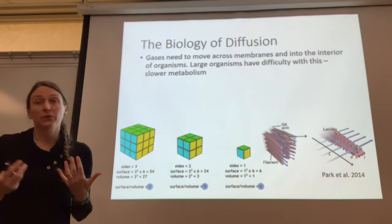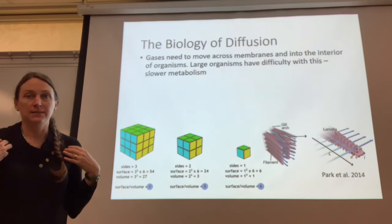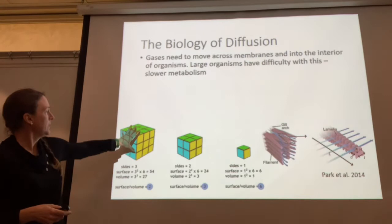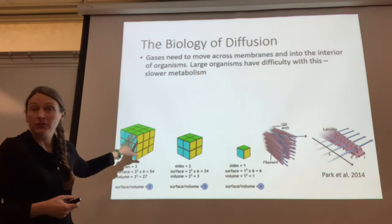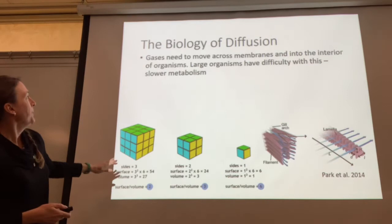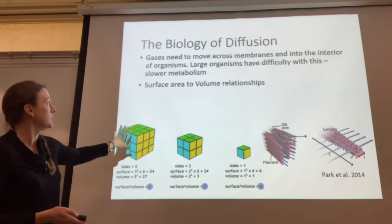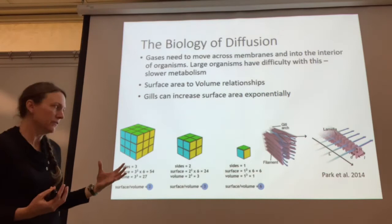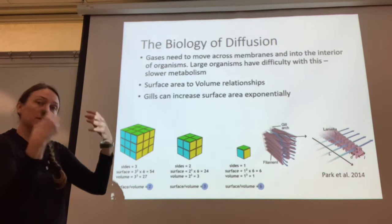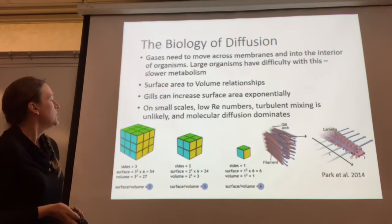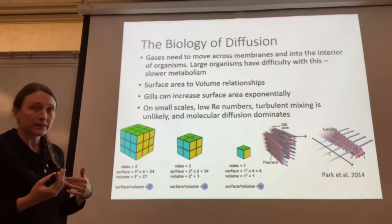The biology of diffusion is really important for organisms — they have to get gases from the water into their bodies, so those gases must diffuse across their membranes. For a big organism, it's harder for gas to diffuse across the membrane into the inside of the body compared to a small organism. Surface area to volume ratios of different organisms are really important. Large organisms have a harder time living in aquatic systems and have slower metabolism. There are all kinds of adaptations to increase surface area to volume, creating more surfaces for diffusion.